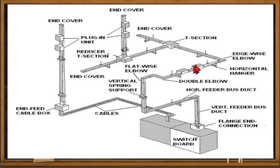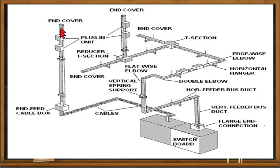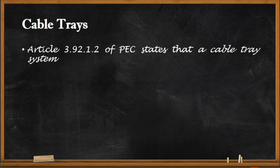We also have a double elbow for changing the run direction, a box sometimes used to reduce or enlarge the feeder bus duct, a horizontal hanger support, a T-section allowing two separate directions, and a plug-in circuit breaker box where you install the enclosed circuit breaker for your floor distribution panel.